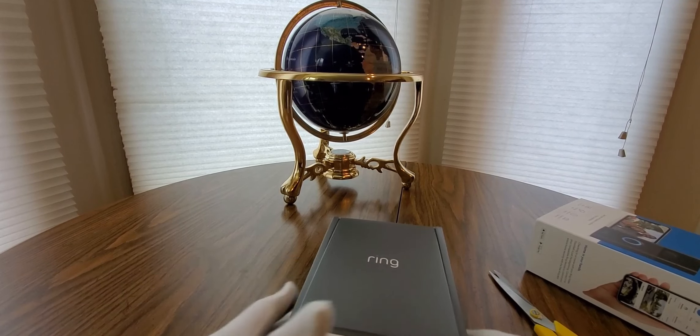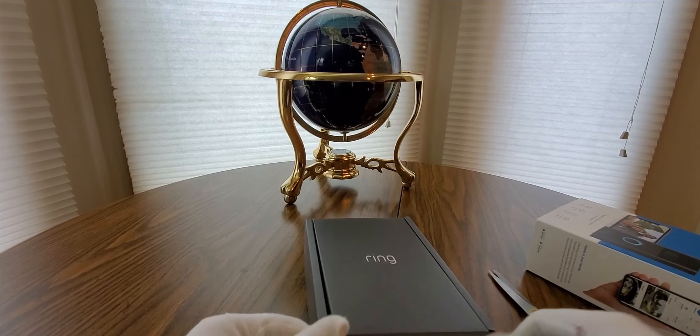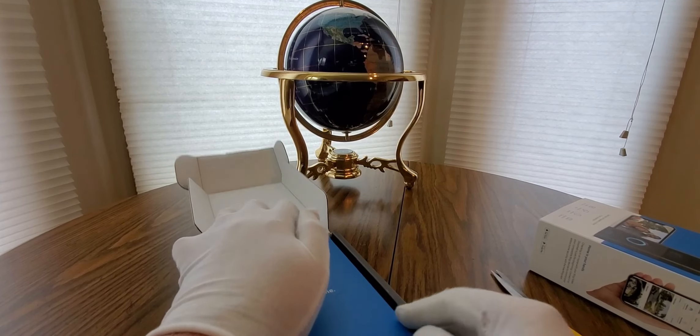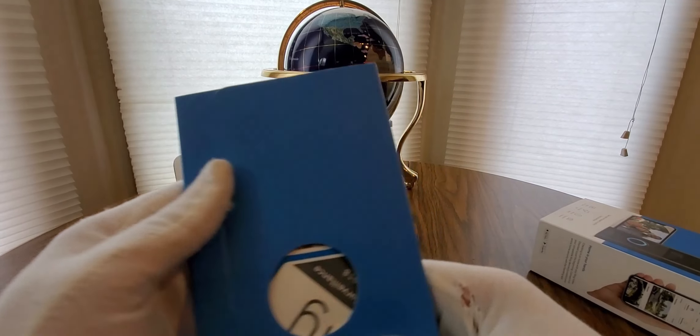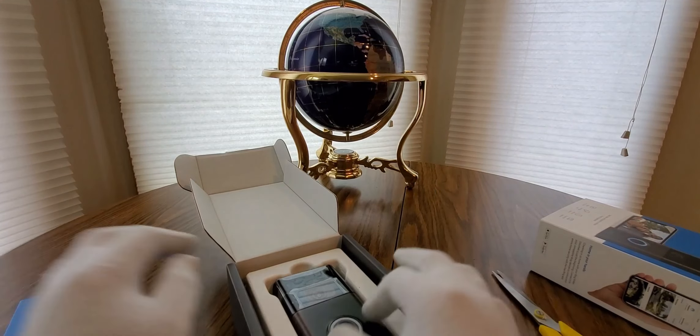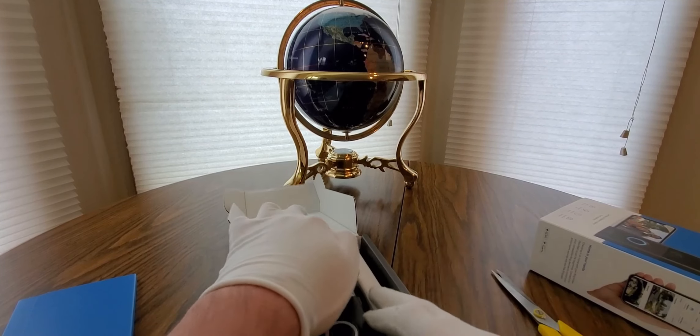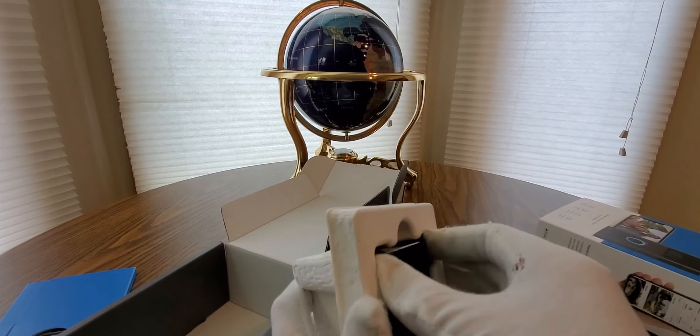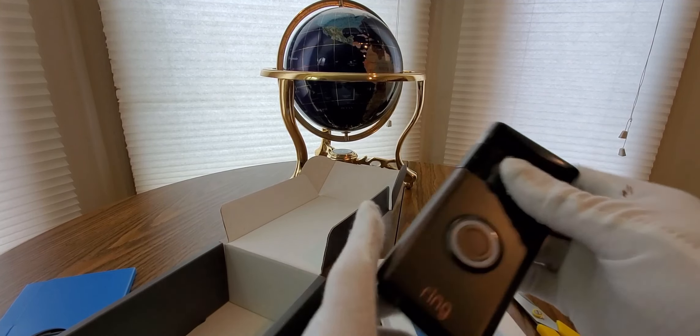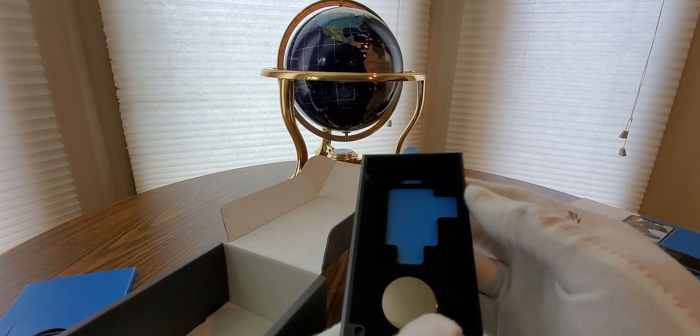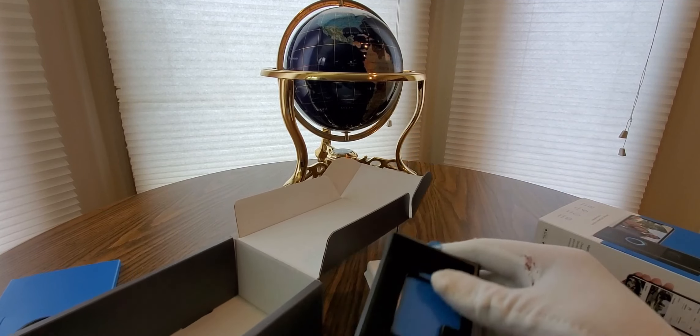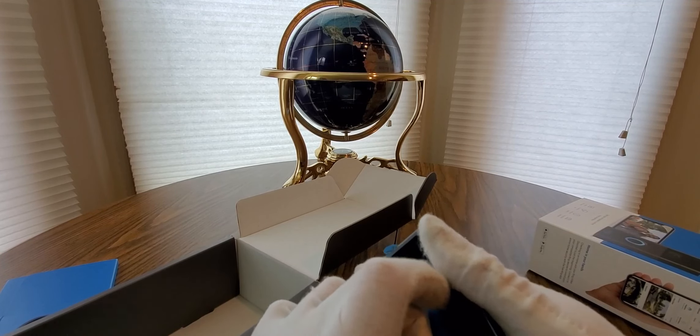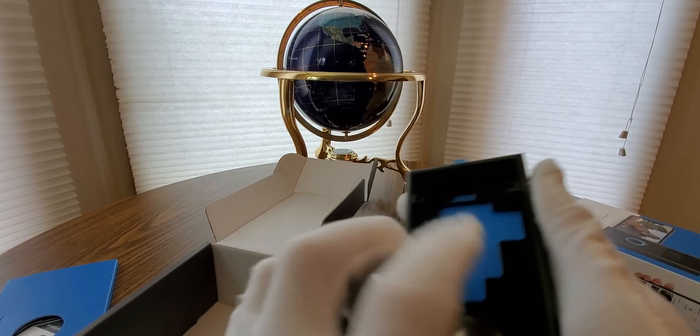There we go. All right, let's take a look at the brand new generation number two Ring. I already know how to set these up. Yeah, pretty much you get a little sticker you can put on your windows, let you know your home is protected. Ooh, this is a nice color. I hope it still fits the same brackets. I think it does because it looks like the same.